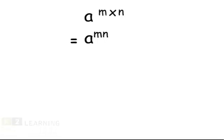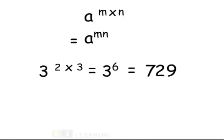To illustrate this law, let us try an example. If we have an expression, 3 raised to 2, the whole raised to 3, it can be written as 3 raised to 2 into 3, which is equal to 3 raised to 6, which in turn is equal to 729.